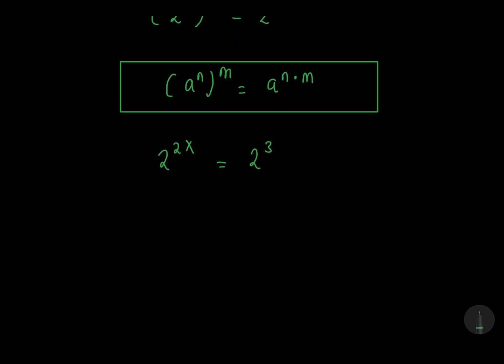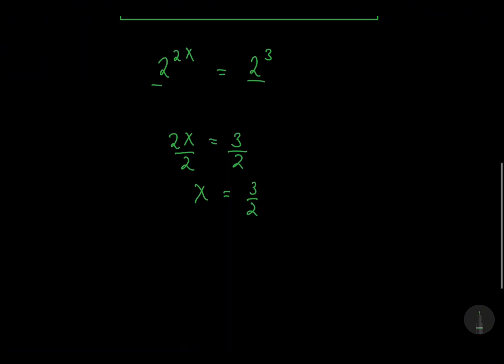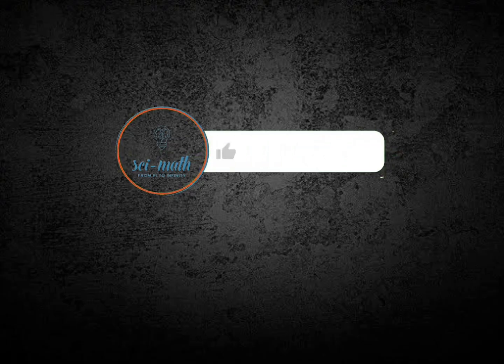Because we have the same base, the exponent must be equal. Therefore, x is equal to 3 over 2. What do you think?